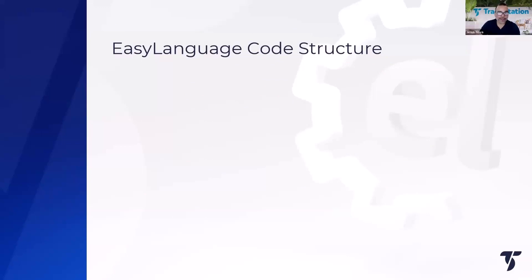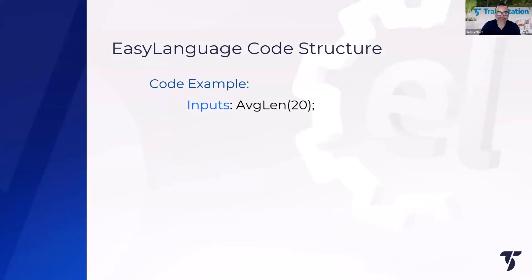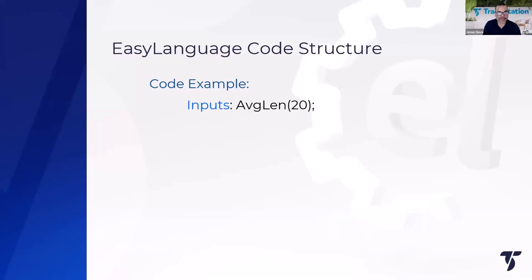Let's continue on to EasyLanguage structure. We follow a certain structure that we recommend you follow as well. Every built-in study and strategy supplied with the TradeStation platform uses this structure. First, it's going to provide inputs. Inputs are ways for the TradeStation user to access certain parameters and modify them from the front end — the TradeStation desktop — without going into the EasyLanguage editor to change the programming code.